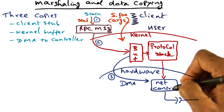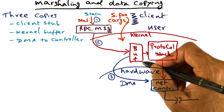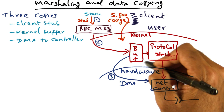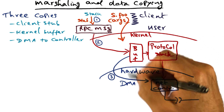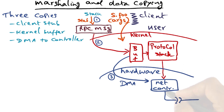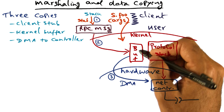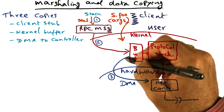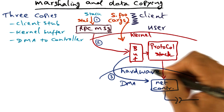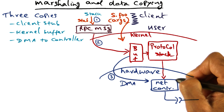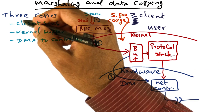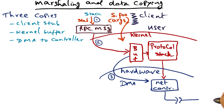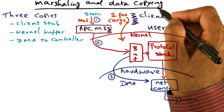Now the message is in the buffer of the operating system kernel. The operating system can then kick the network controller and say, go ahead, take this buffer and send it out on the wire to the desired destination. The network controller at that point is going to move the bits from the kernel buffer in system memory into its internal buffer using DMA. This is the third copy. So those are the three copies involved in marshalling the arguments of the call before it can be put out on the wire, and the copying overhead is the biggest source of overhead for RPC latency.